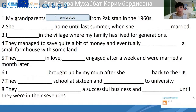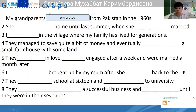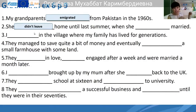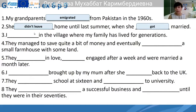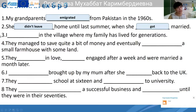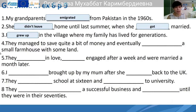No worries, it's okay. 'She home until last summer when she married.' She didn't leave home until last summer — so she still lived there before she got married. Now: 'I in the village where my family has lived for generations.' What did she do? She grew up. Very good.